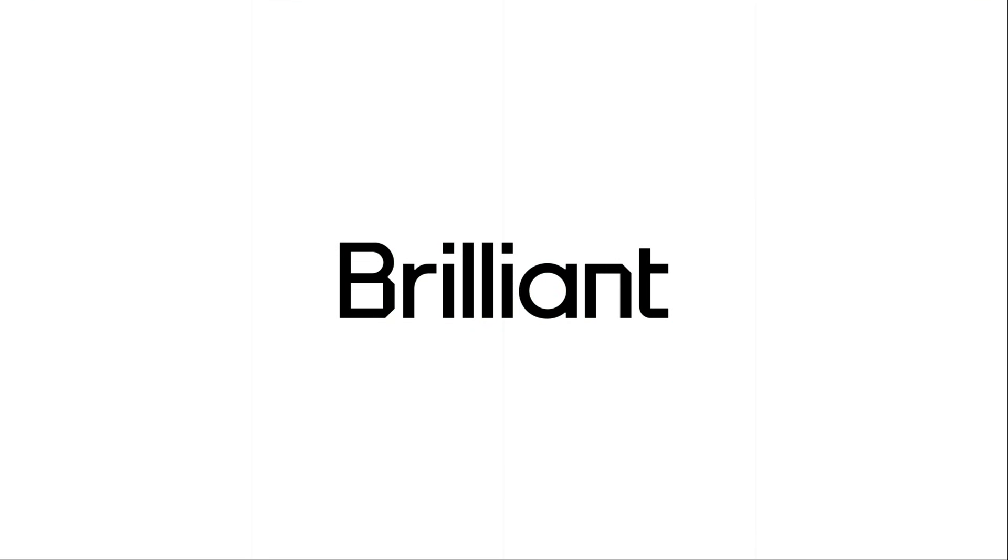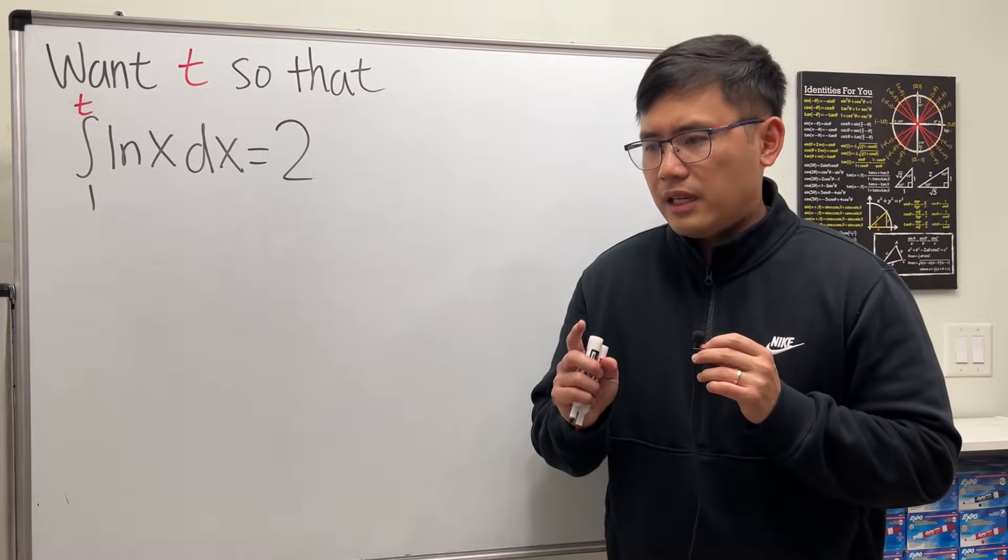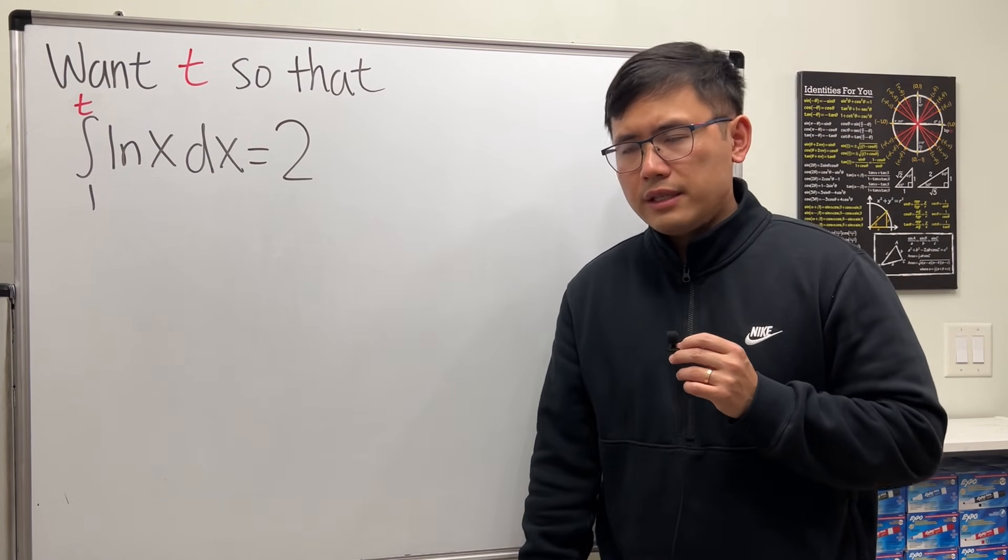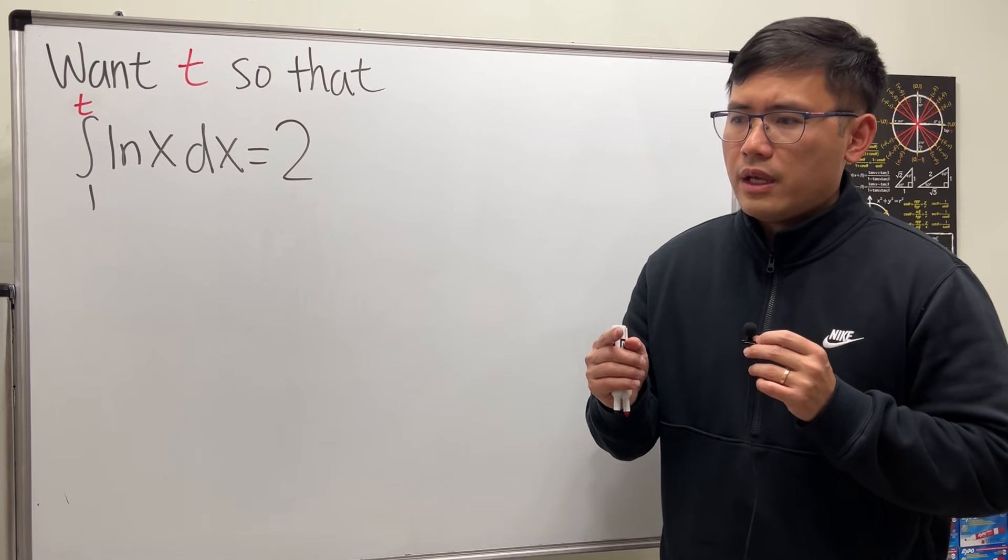Thanks to Brilliant for sponsoring this video. So the other day I wanted to have the area under the curve ln(x) to be 2. I tried it. Let's say the starting value is equal to 1 and integrated from 1 to e, and the result is equal to 1.